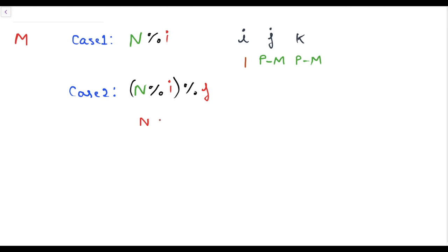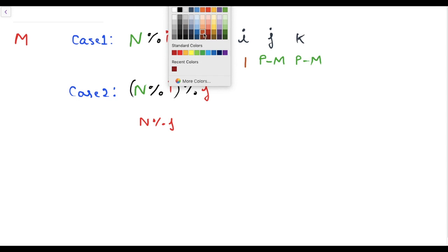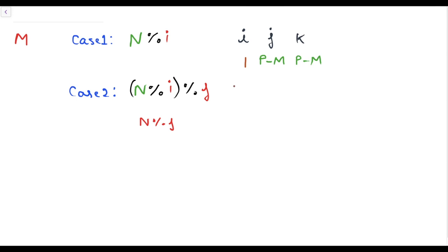In case 2, we want our answer from n mod j. To do so, i must be greater than n so that i does not affect the value of n. The possible values for i are those greater than n, that is p minus n. The value for j is 1, because this time j gives the answer. And the values of k are those greater than m, so p minus m.